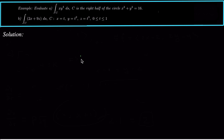Hey guys, what's up? Today we're looking at finding the line integral of a scalar function. So we've got a line integral of a scalar function here, Part A: the integral over the curve C of x times y to the 4, ds, and C is the right half of the circle x squared plus y squared equals 16.